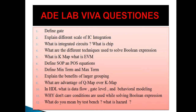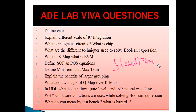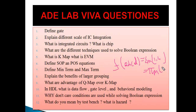SOP is the logical sum of those fundamental products that produce output one in the truth table. In an SOP expression with four variables A, B, C, D, we use summation notation with minterms representing ones in the truth table. Maxterms are represented using the pi notation, which represents zeros in the truth table.